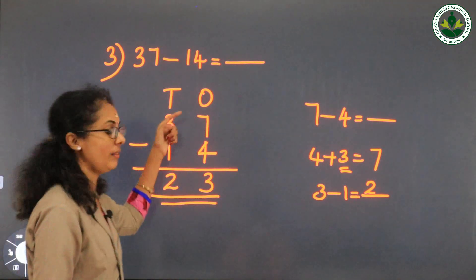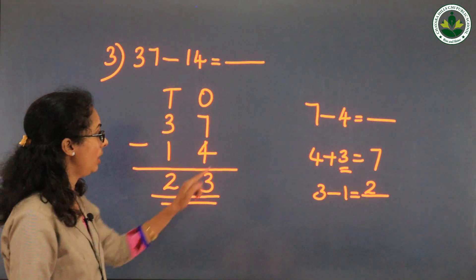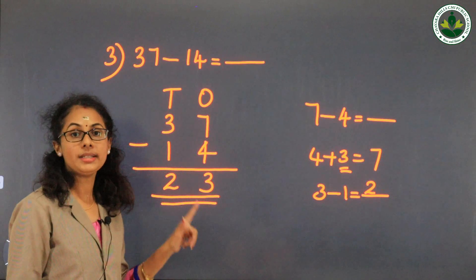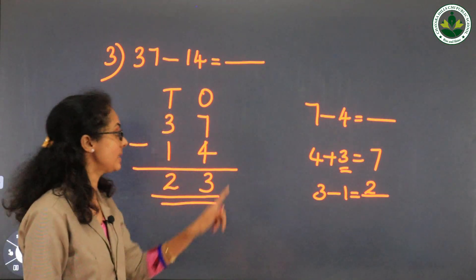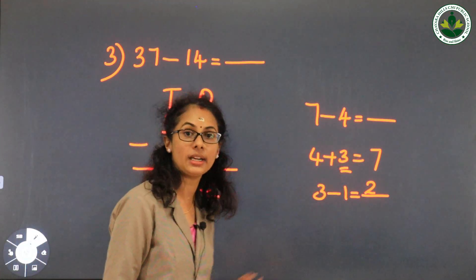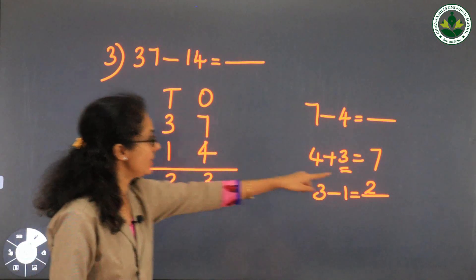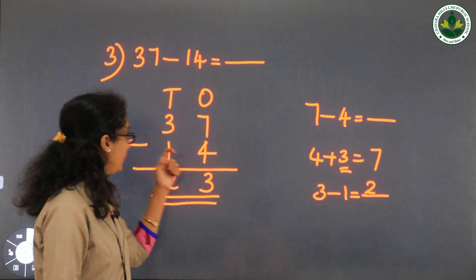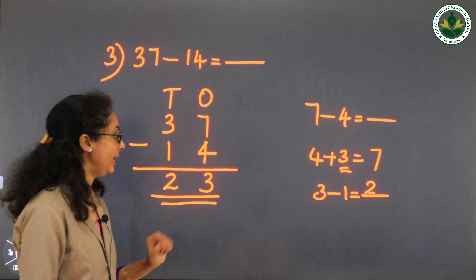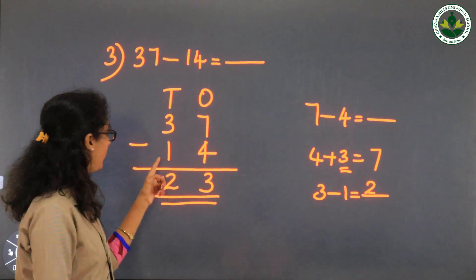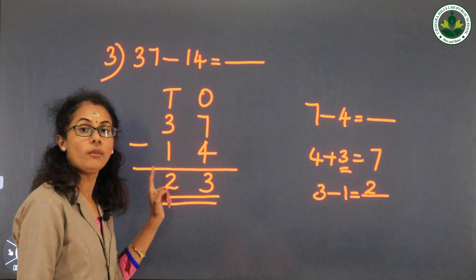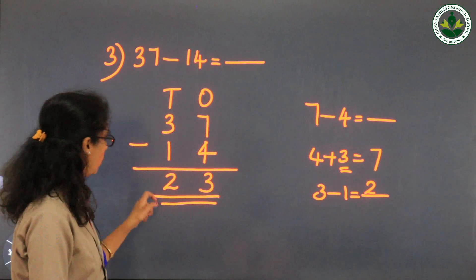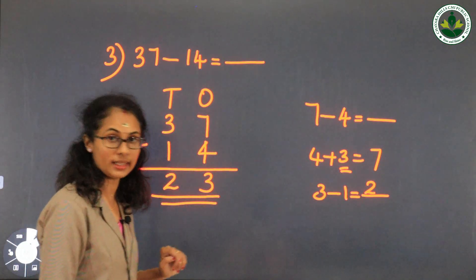So 7 minus 4 equals 3, and 3 minus 1 equals 2. Answer is 23.